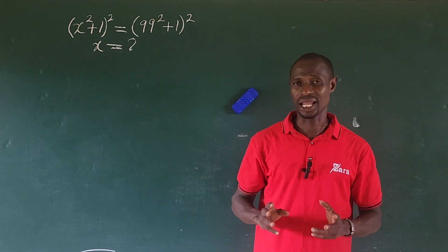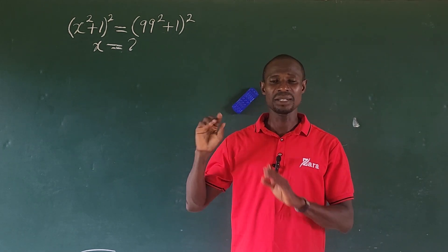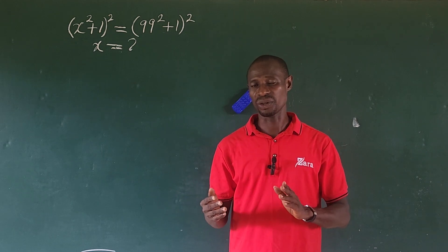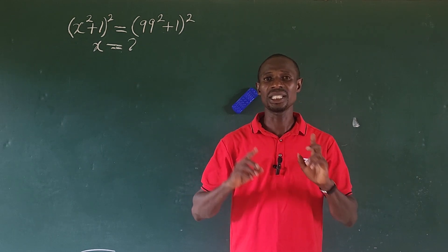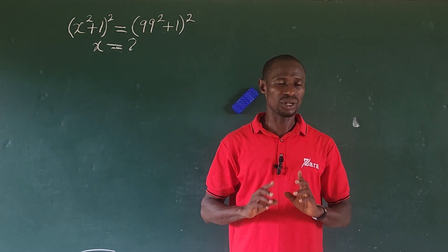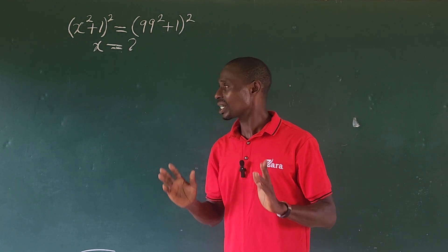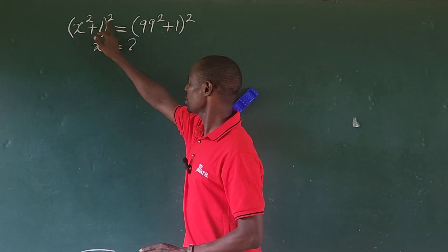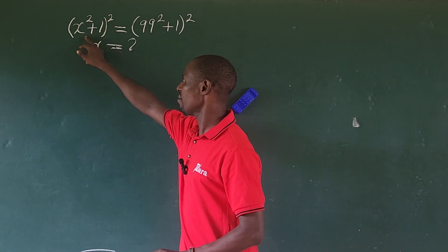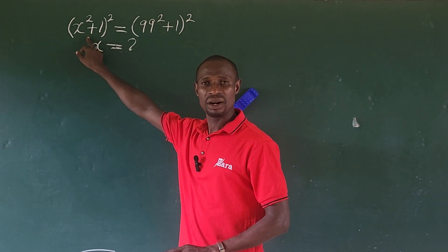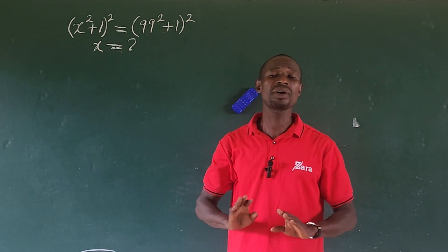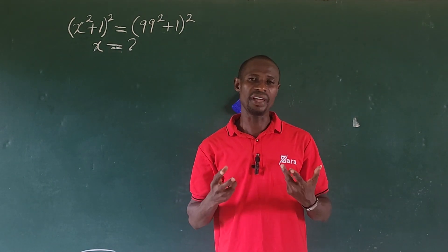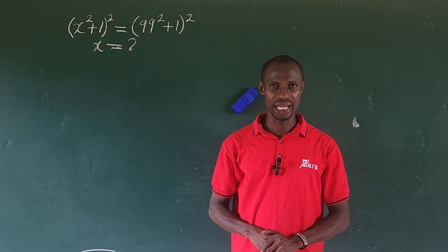We have been taught in this class that the highest power of the variable in any exponential equation gives us the number of solutions or roots to that exponential equation. If we use this to open up everything, we discover that the highest power of x is going to give us 4. So here we are asked to look for 4 values of x to this exponential challenge.